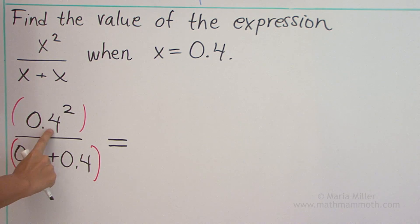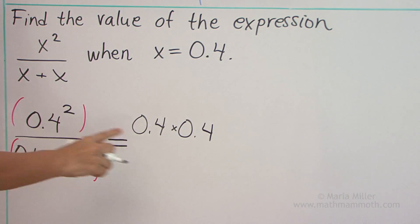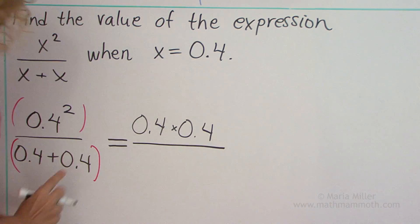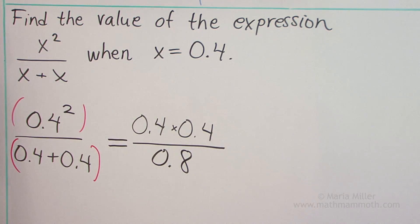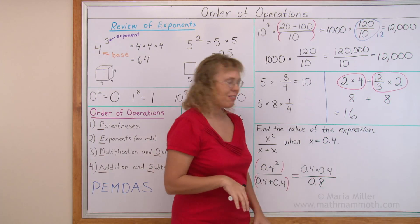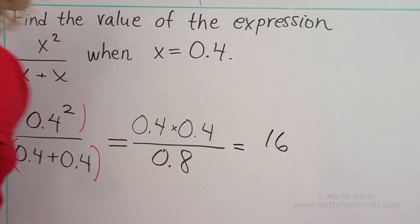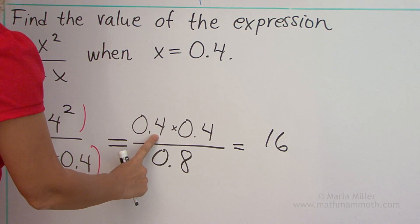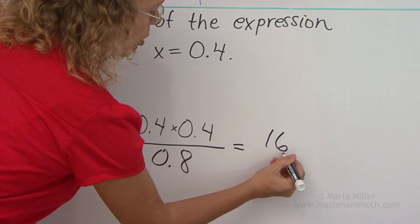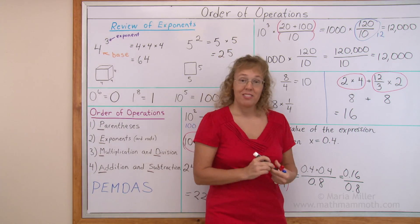Over here I have 0.4 squared. So that means, let's write it out in case you have forgotten, it means 0.4 multiplied by itself. This one is easy. I can add and get 8 tenths. Now decimal multiplication. Do you remember? Multiply as if there were no decimal points. 4 times 4. And then you need to have as many decimals here as they are in total in the factors. One decimal here, one decimal here. So I need two decimals here. Like that.